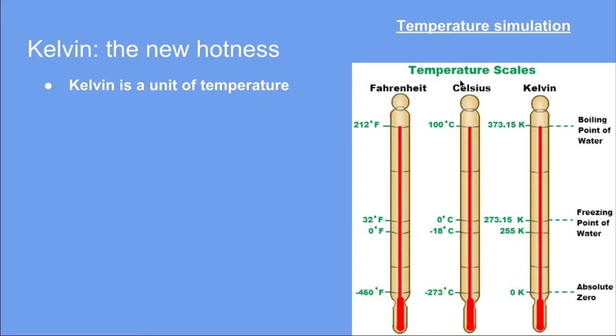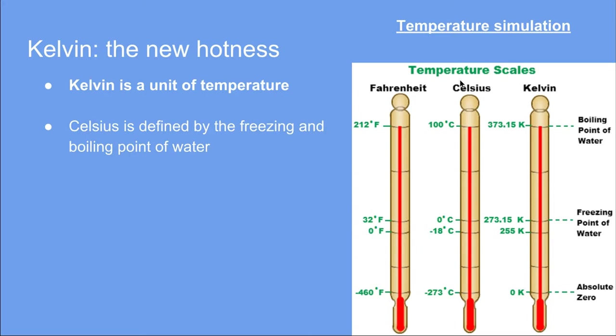Celsius is actually defined by the freezing point and the boiling point of water. So back a long time ago, when we were deciding on the scale for all these different temperatures, scientists took water — it's very important for life. They measured the temperature at which it froze and set that at 0 degrees Celsius, and they measured the temperature at which it boiled and set that to 100 degrees Celsius. Everything else was split up into 100 equal segments, and that's how they came up with the definition of Celsius.